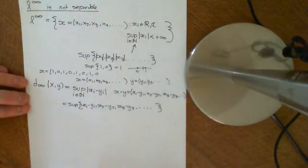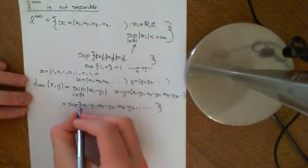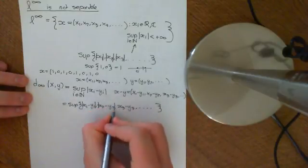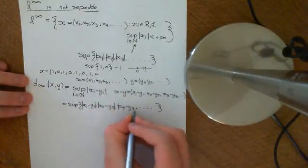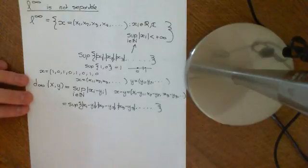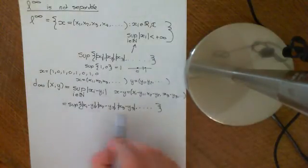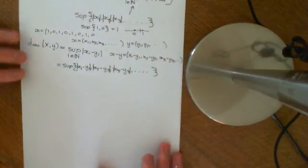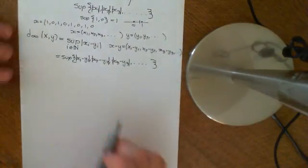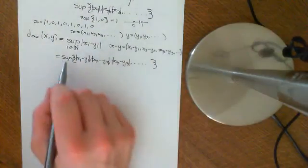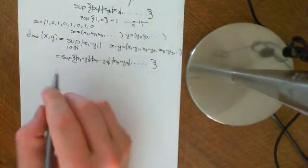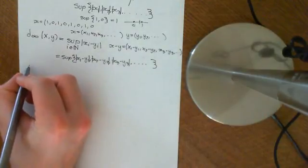The modulus should be applied around each difference x_i minus y_i, otherwise we could have negative or complex numbers in the set, whereas we need a set of non-negative real numbers. So the modulus signs are important there. Now let's discuss why this supremum exists — why does this supremum exist?